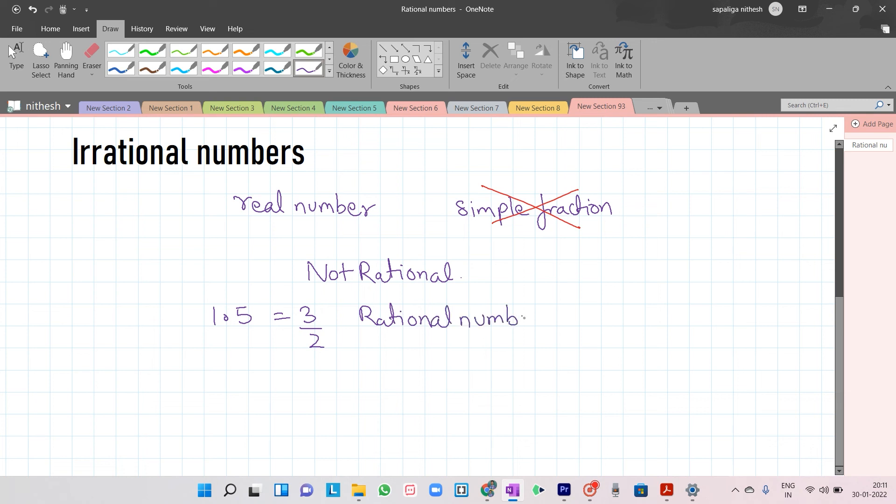Or we have pi is equal to 3.14159 and goes on continuously. But we don't know the actual ratio of it. Irrational number does not have ratio.